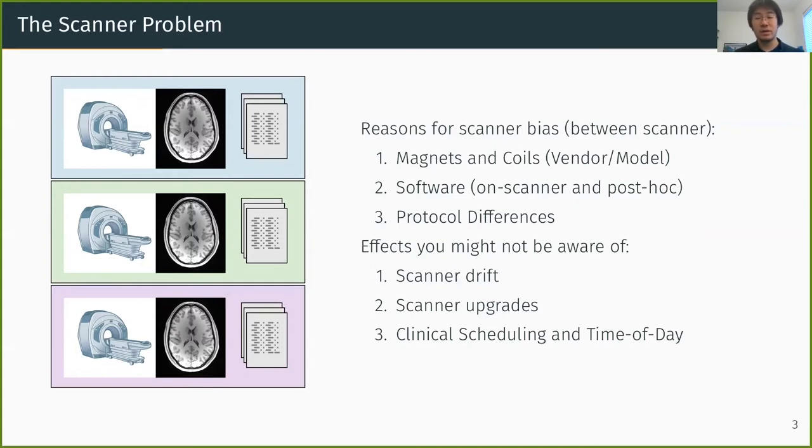Some other effects that you might not be aware of, scanner drift, so even the same scanner with the same hardware, it will slightly change over time. This is through use, through the histories of the magnet, that if you scan a phantom today, and you scan that same phantom a year from now on the same scanner, you'll get slightly different images.